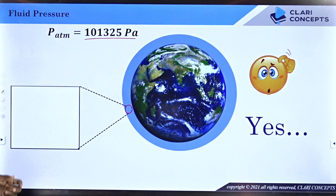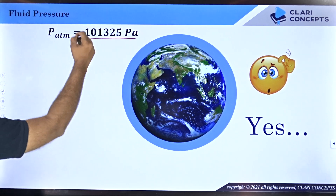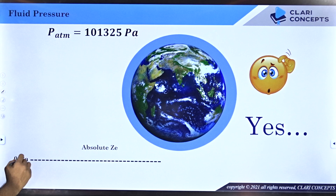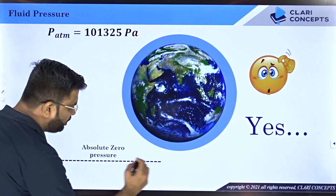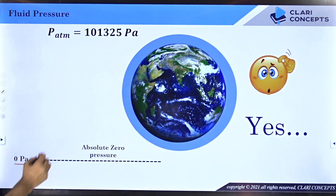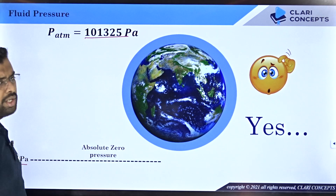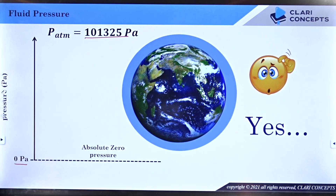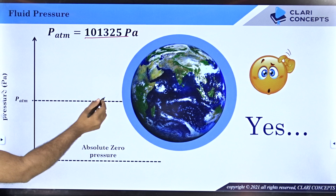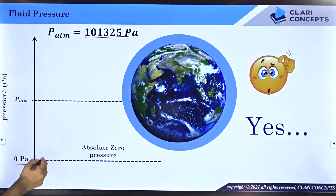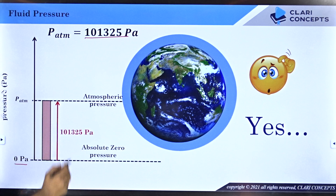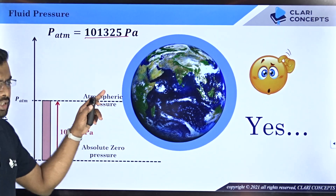Now if I try to draw this on a graph, let's say I have an absolute zero pressure line over here. This line represents 0 Pascal pressure. If I want to represent atmospheric pressure, I will draw a vertical line and somewhere above I would say there is an atmospheric value of pressure. Therefore this length will represent 101325 Pascal. This is the atmospheric pressure line.